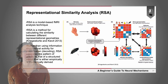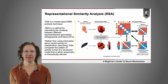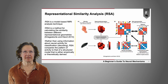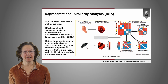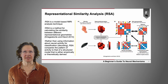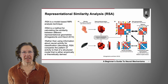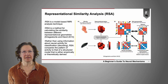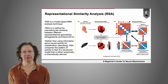I'm going to tell you about a novel neuroscientific technique called representational similarity analysis, or RSA. RSA is a model-based technique for analyzing fMRI data. It's essentially a method for calculating the similarity between different kinds of representational geometries — the structural relationships that govern a system of representation. Rather than the standard decoding methods for understanding neural activity semantics, RSA compares the pattern of activity to that of some structured model that's either empirically or theoretically derived.